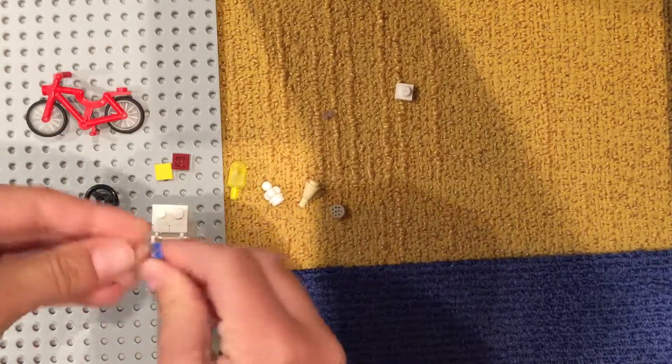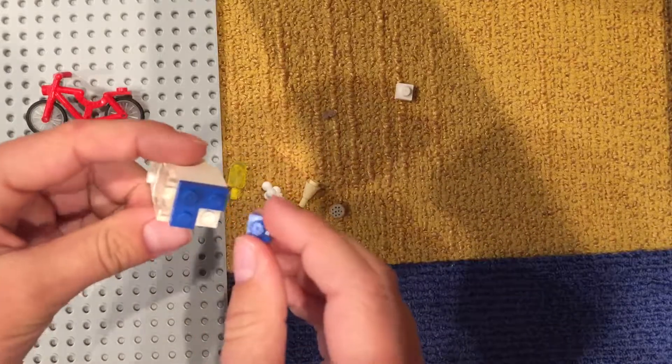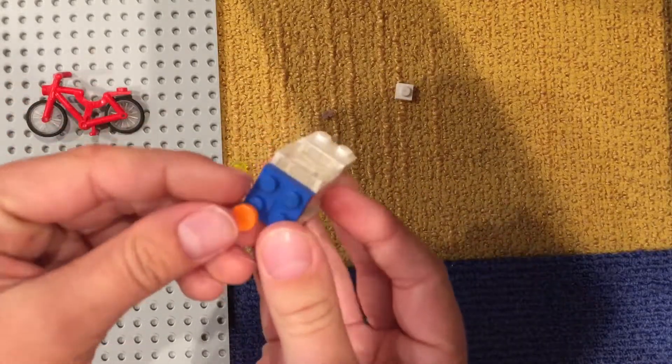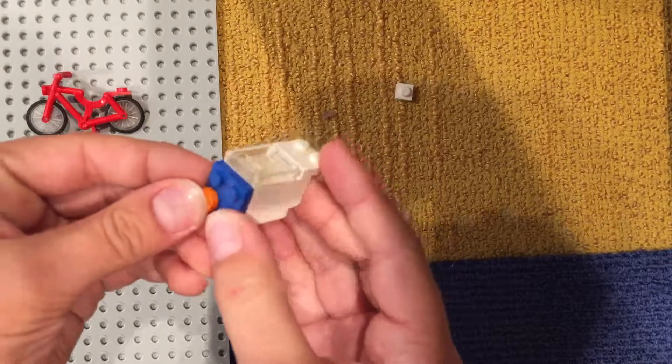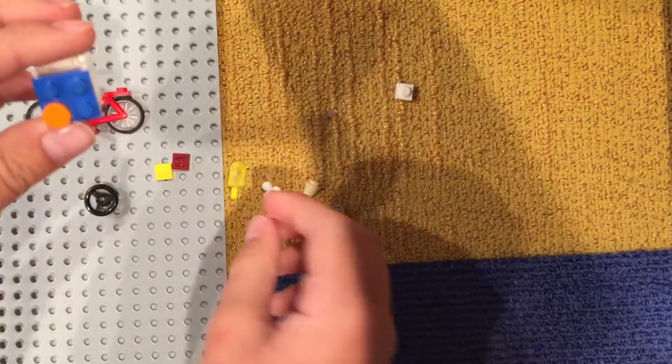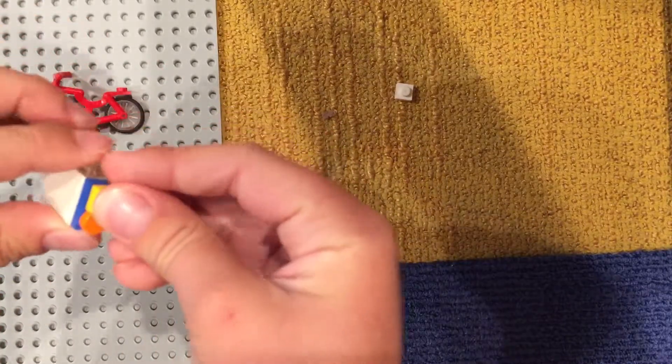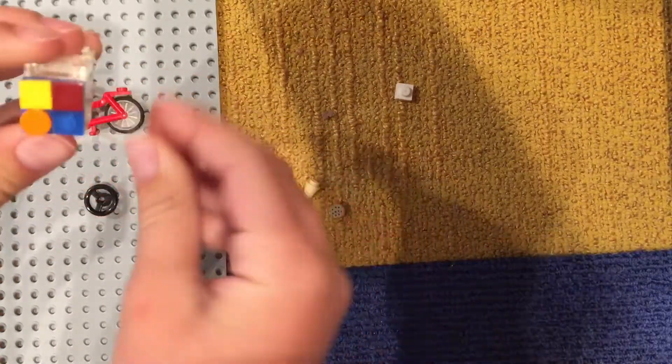And then you do is you grab like a one by one here or it could be a two by two. This is just what I had. And you can put like different colors here just so it's kind of like the different options of ice creams and then you just put whatever of your choice of ice creams here.